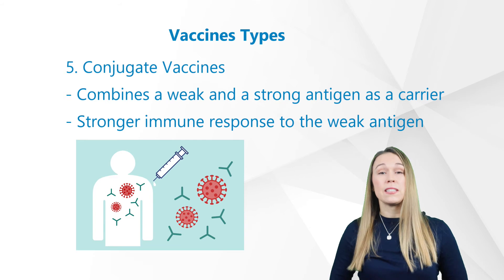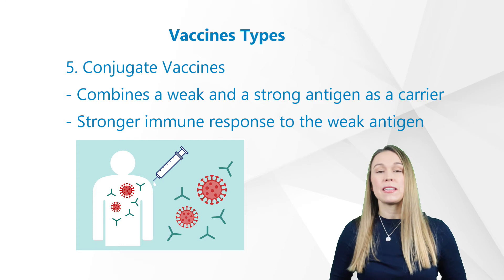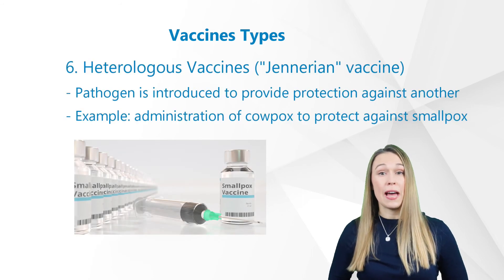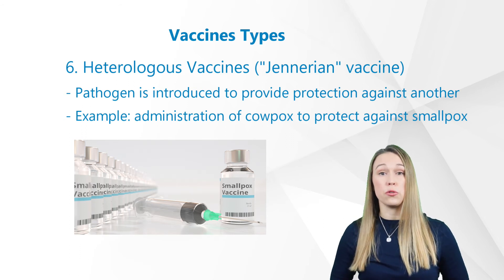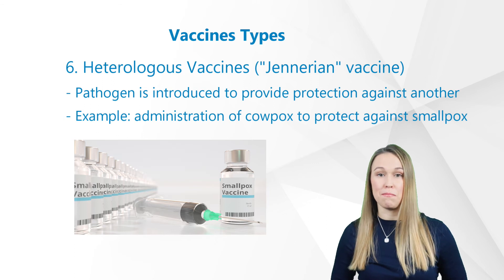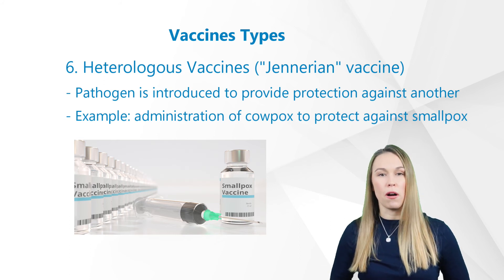A conjugate vaccine combines a weak antigen with a strong antigen as a carrier so that the immune system has a stronger response to the weak antigen. A heterologous vaccine, also known as a jennerian vaccine, is a type of live vaccine where one pathogen is introduced in order to provide protection against a different one. These vaccines are pathogens of other animals that either do not cause disease or cause mild disease in the organism being treated. An example is the historical administration of cowpox — vaccinia — to protect against smallpox — variola — by Jenner in 1796.